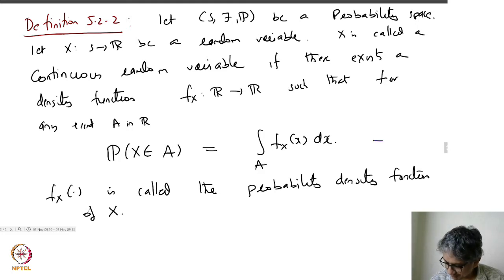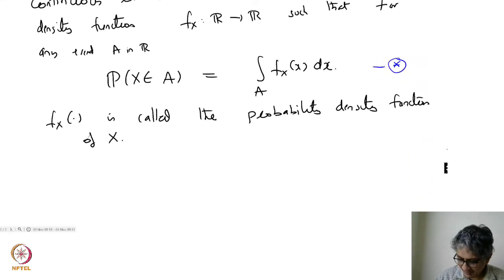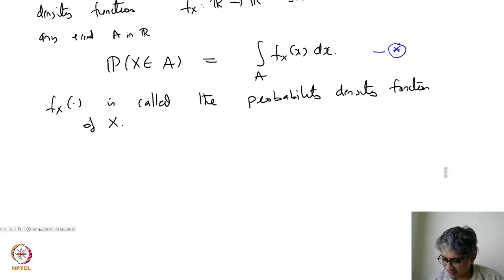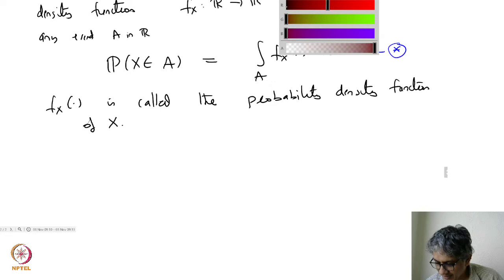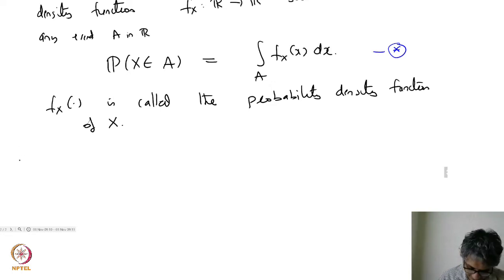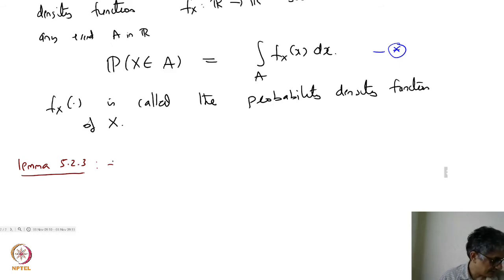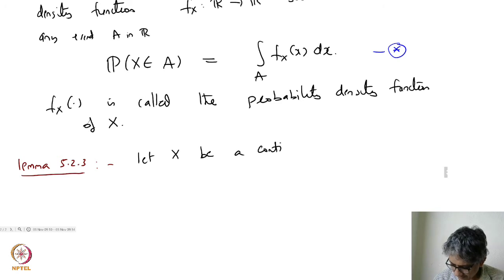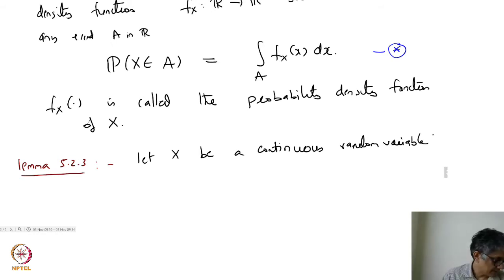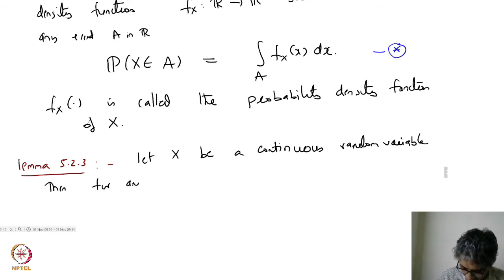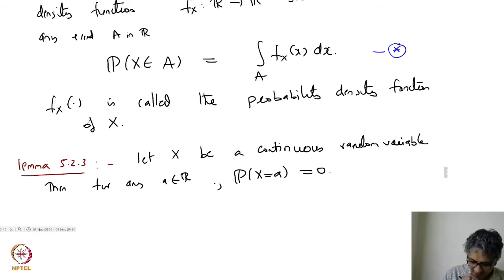So compared to the discrete setting where we had a probability mass function f_X, here we have the probability density function f_X. A continuous random variable's probabilities are given by integrals of f_X. One immediate feature is the following lemma: for any a in R, the probability that X equals a is equal to 0.